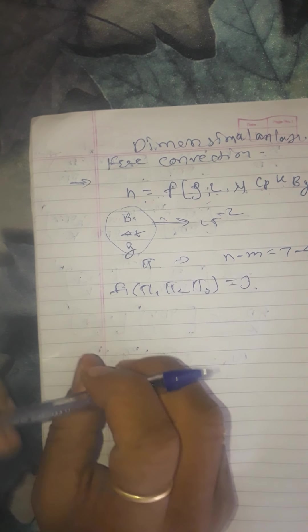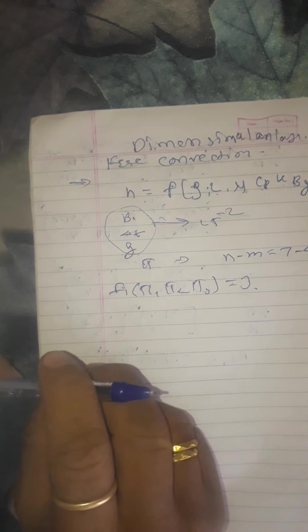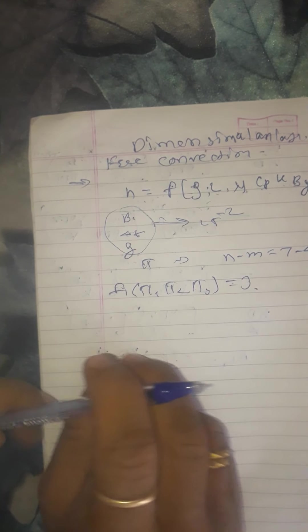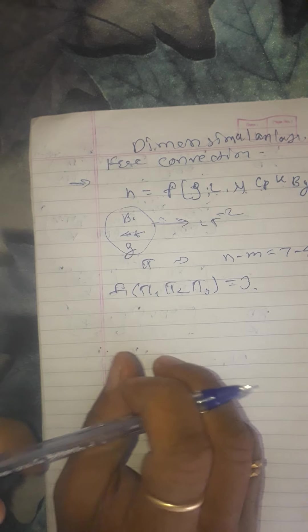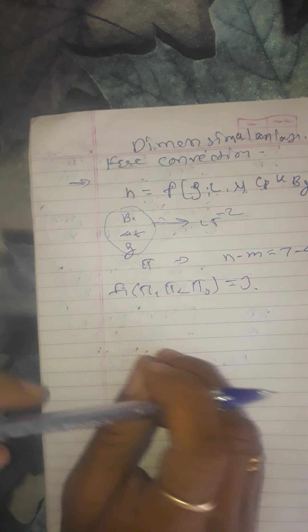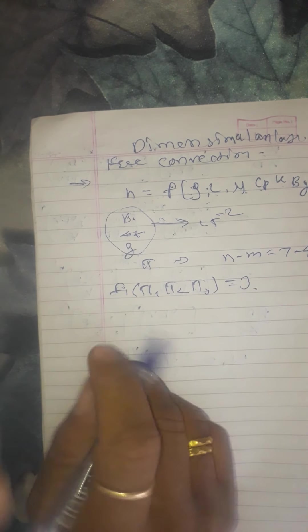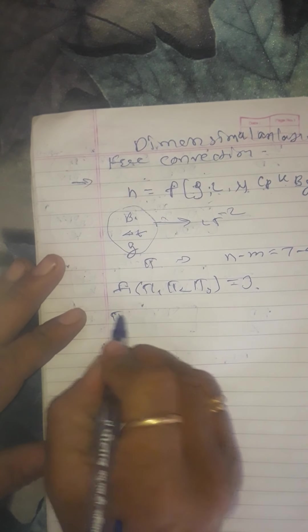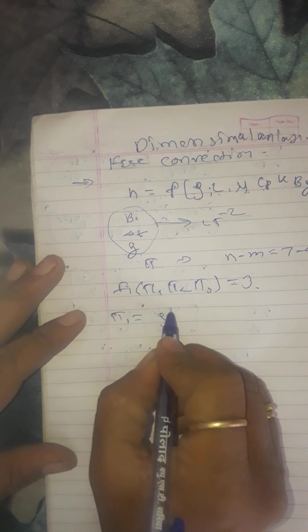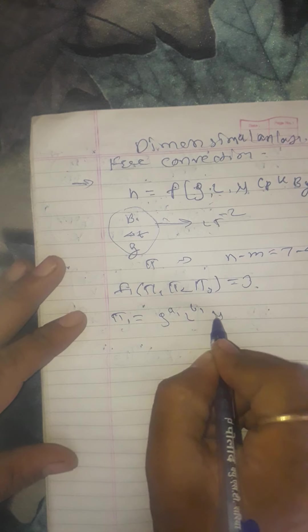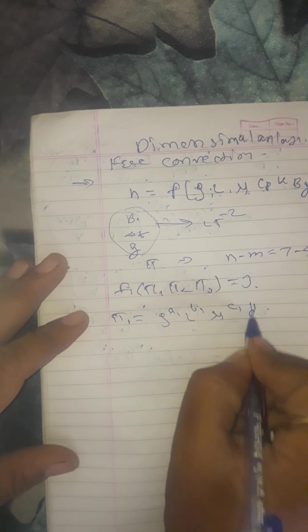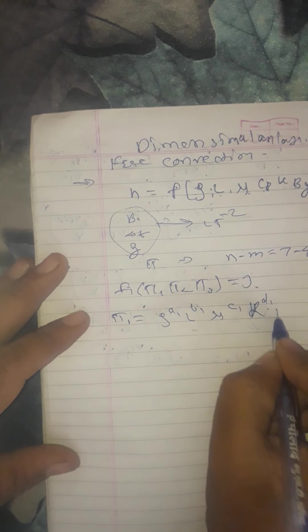We choose density, length, mu, and k as the core group with unknown exponents. So the groups to be formed like this for pi 1 term: rho a1, L b1, mu c1, k d1, and h.